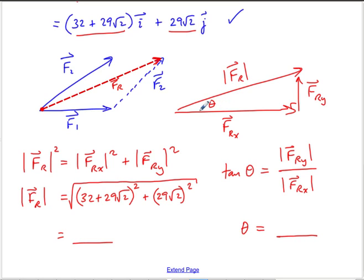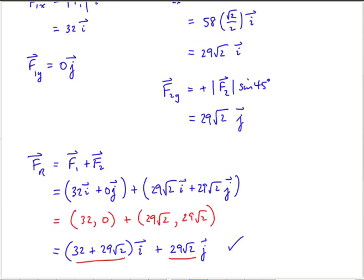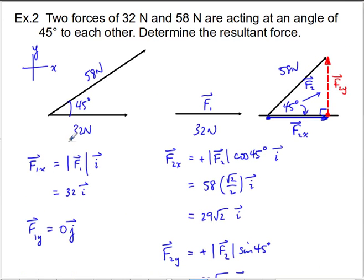So we could report the resultant force as a magnitude at an angle of θ above the horizontal, where the horizontal was defined at the beginning of the question.